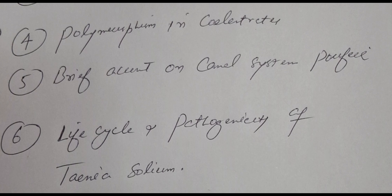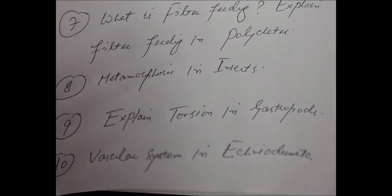The seventh question is: what is filter feeding — explain filter feeding in polychaetes. Eighth is metamorphosis in insects. Ninth question is: explain torsion in gastropods. And last, we have the vascular system in echinoderms. This was all about the guest paper of zoology for BG first semester. Hopefully you will get enough marks from this guest paper.